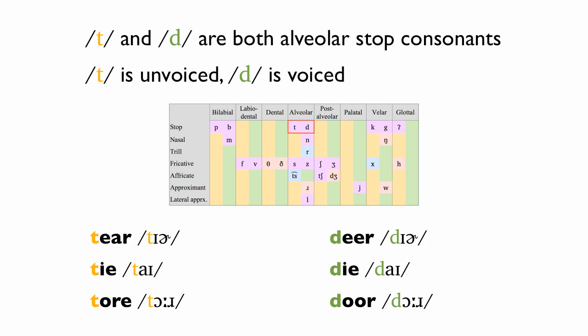D is voiced. Tear — Deer. Tie — Die. Tor — Door.